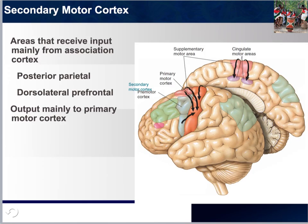We've now moved away from the highest layer of the hierarchy and are working our way back down to the secondary motor cortex. This would have received input mainly from association cortex — information traveling from the posterior parietal to the prefrontal, and then bringing input to the secondary motor cortex. This then starts stimulating pathways making their way back down to the spinal cord so that we could engage in motor behavior.